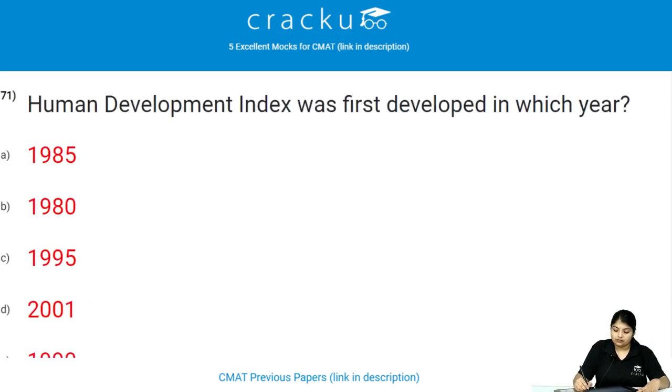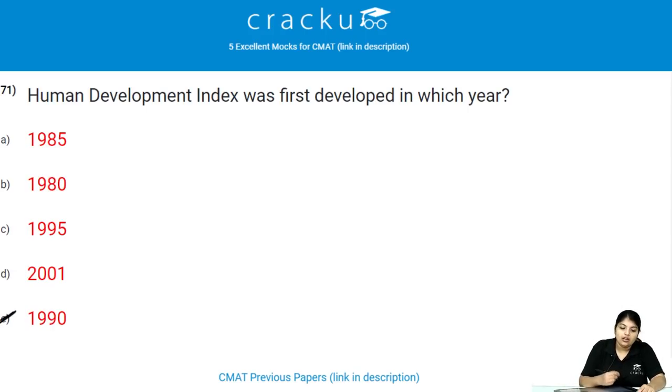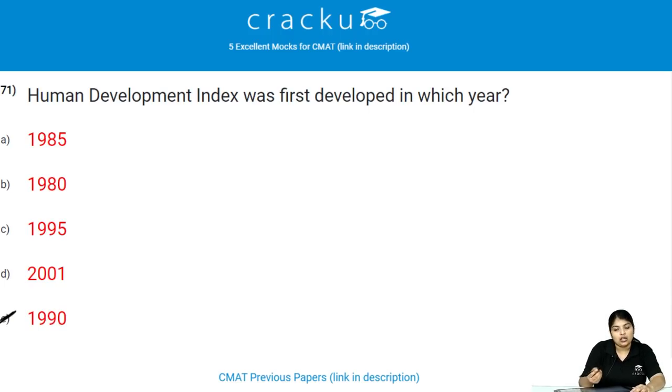Human Development Index was first developed in which year? It was first developed in the year 1990, by Mahbub ul Haq.